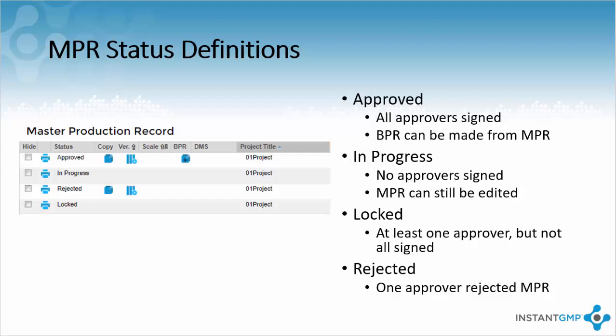Approved means the NPR has been signed off by all members listed in the approval section, and now BPRs can be created from it. Rejected means one of the approvers has rejected the NPR. This locks the NPR and means the NPR must be created all over again.